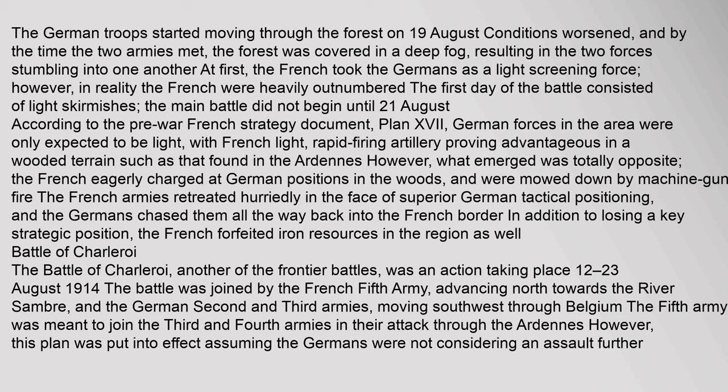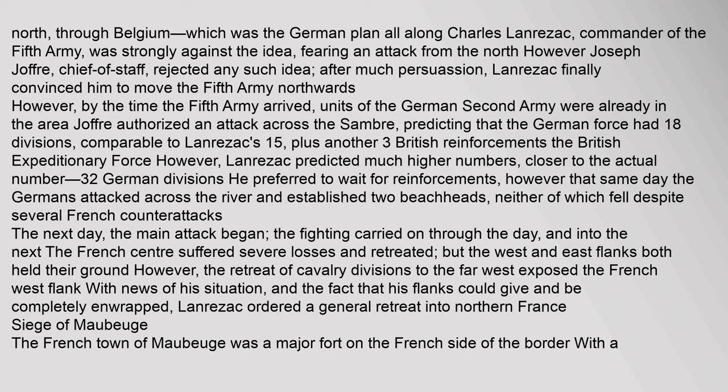Battle of Charleroi: Another of the frontier battles, the Battle of Charleroi was an action taking place 12–23 August 1914. The battle was joined by the French 5th Army advancing north towards the river Sambra, and the German 2nd and 3rd Armies moving southwest through Belgium. The 5th Army was meant to join the 3rd and 4th armies in their attack through the Ardennes; however this plan assumed the Germans were not considering an assault further north through Belgium — which was the German plan all along. Charles Lanrezic, commander of the 5th Army, was strongly against the idea, fearing an attack from the north. After much persuasion, Lanrezic finally convinced chief of staff Joseph Joffrey to move the 5th Army northwards; however, by the time the 5th Army arrived, units of the German 2nd Army were already in the area.